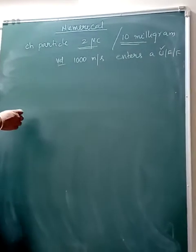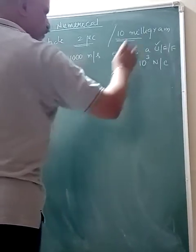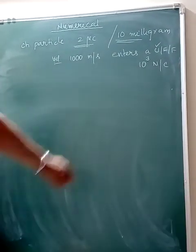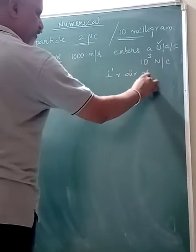The uniform electric field is having a strength of 10 to the power 3, 10 cube Newton per Coulomb directed perpendicular to direction of motion.